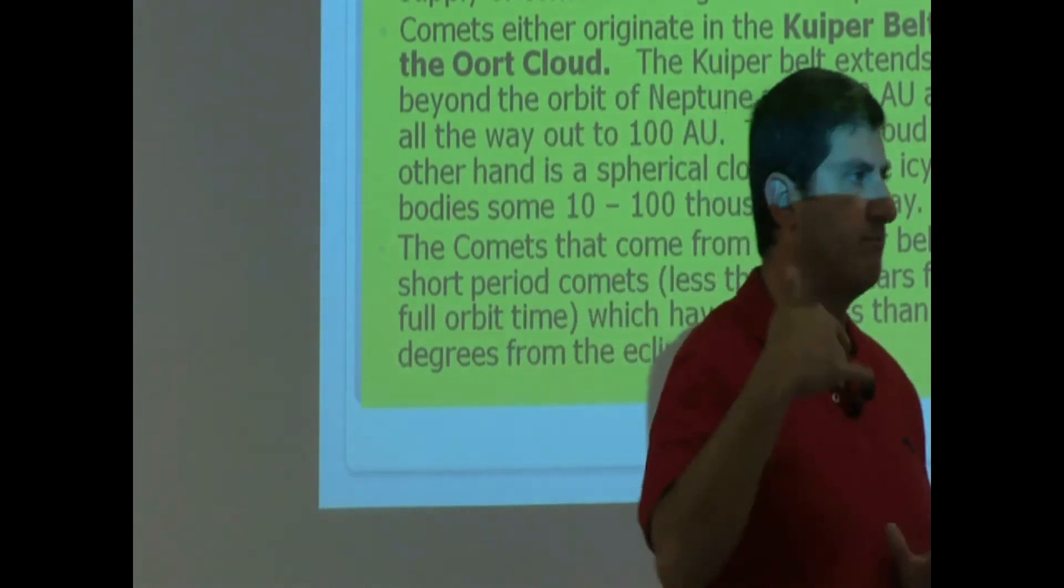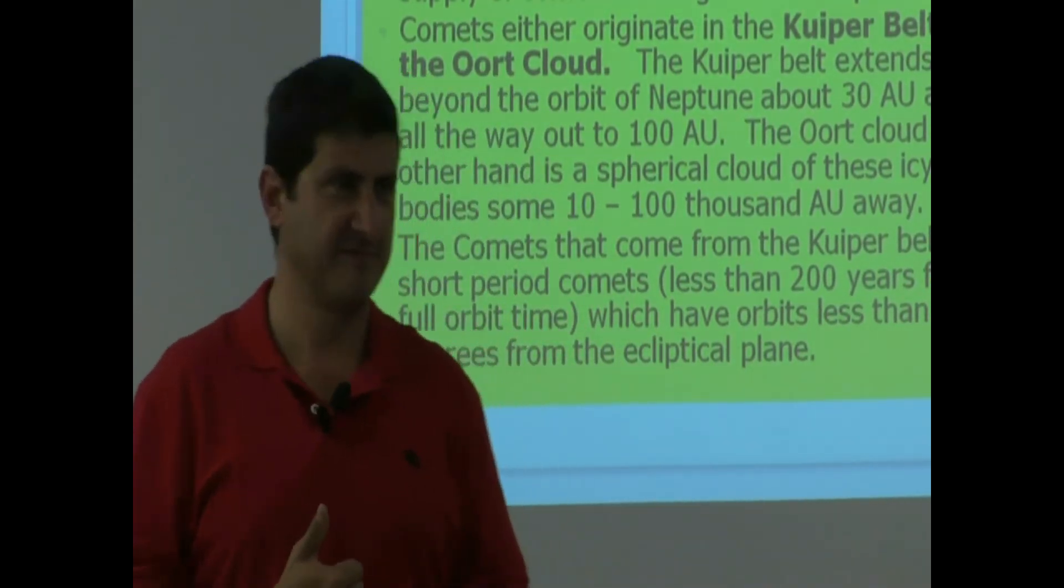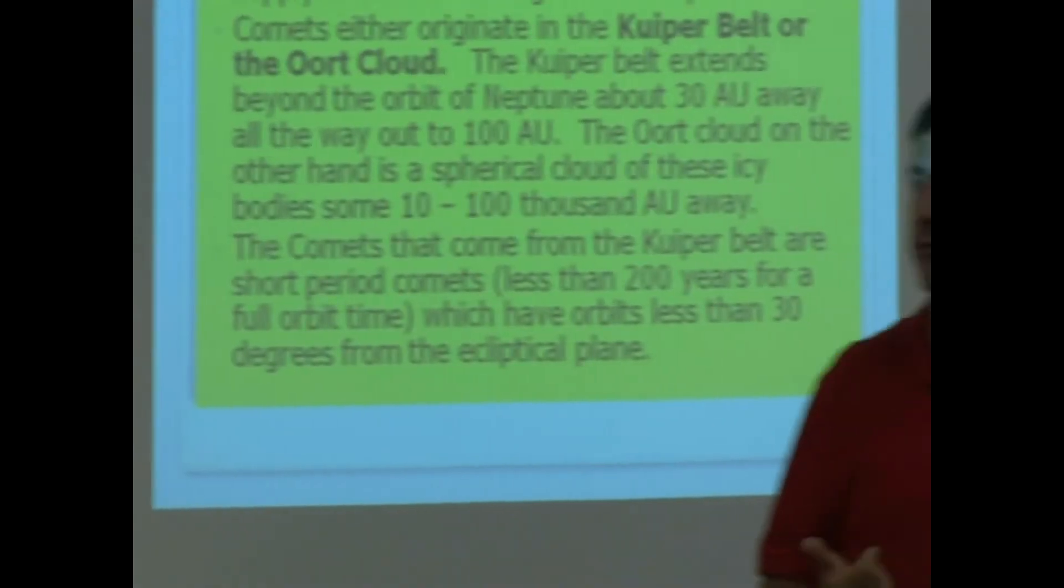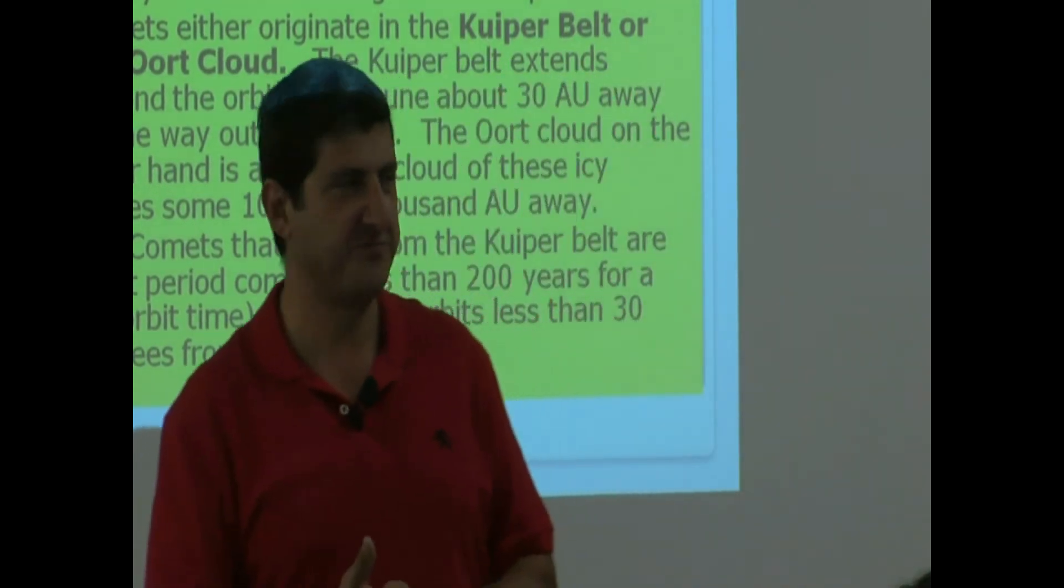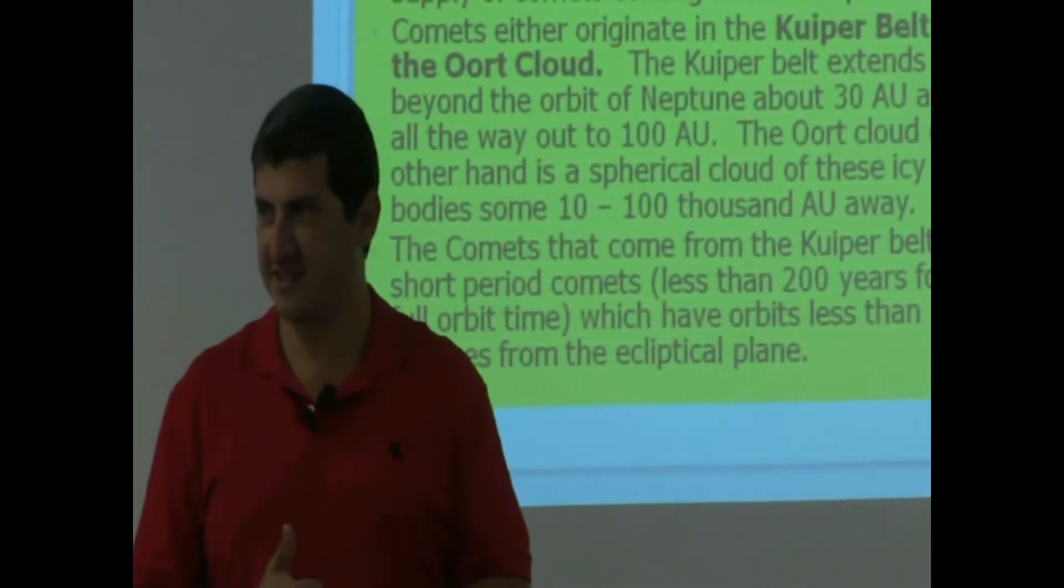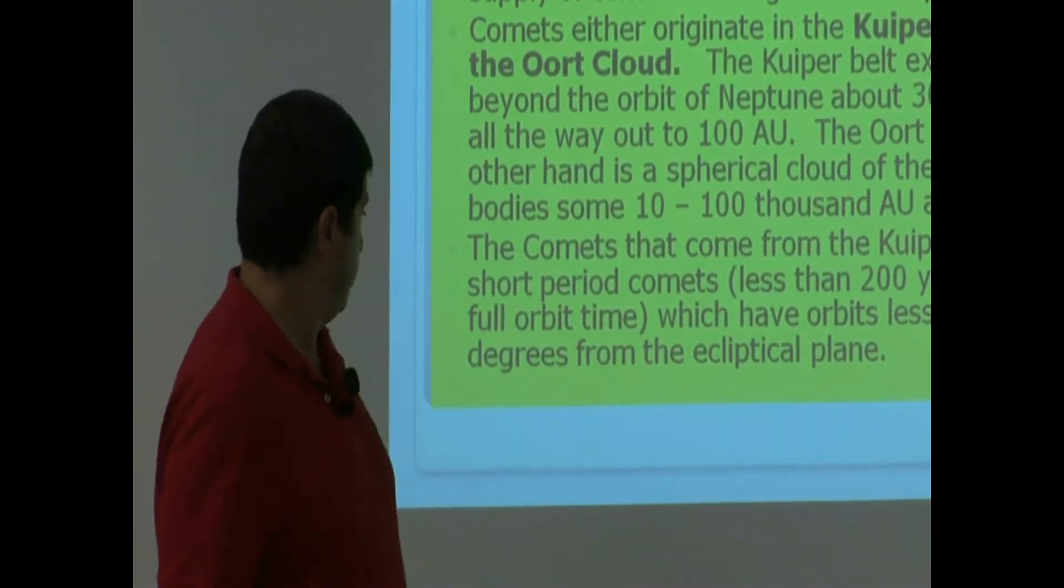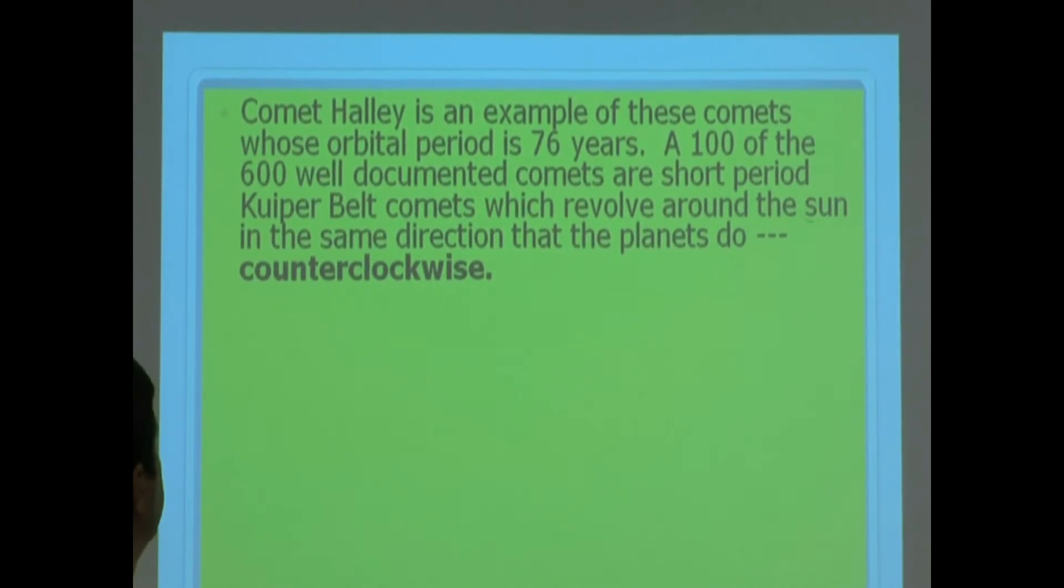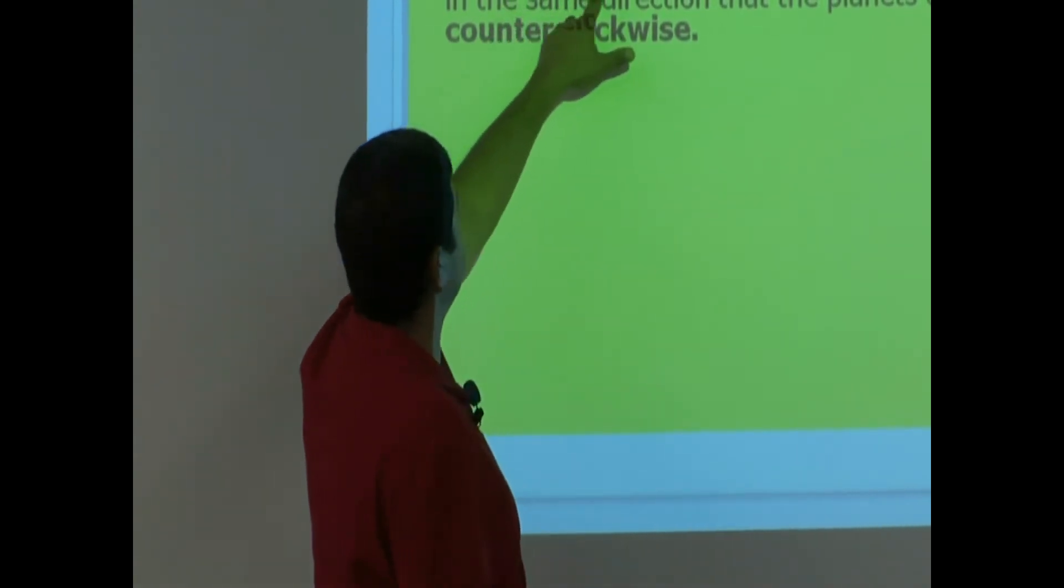What's the most famous Kuiper Belt comet coming from the Kuiper Belt? Halley's Comet. It comes around every 76 years. So it's less than 200 years. Comet Halley is an example of these comets whose orbital period is 76 years. A hundred of the 600 well-documented comets are short-period comets, which come from the Kuiper Belt.